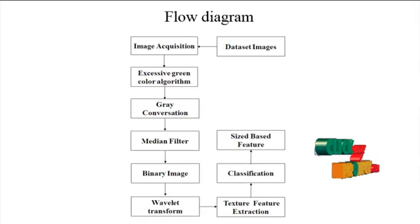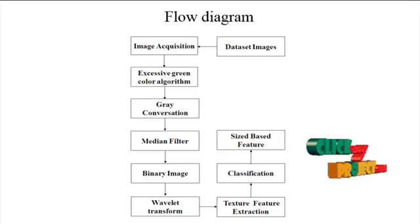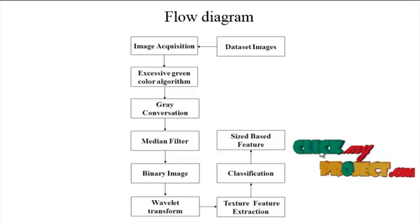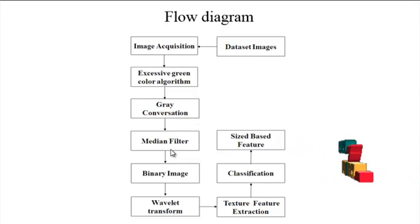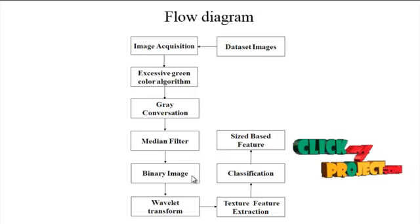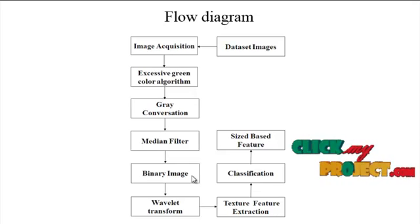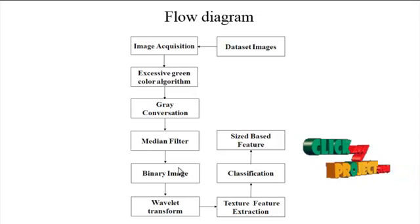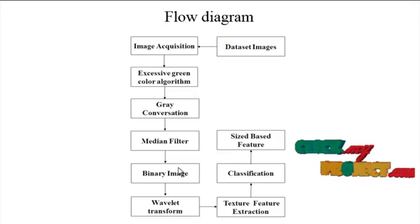In the size-based feature texture classification, it should determine whether a particular region is crop or weed. The area and perimeter are important to classify the image. The median filter is used to remove noise in the input image. A binary image is extracted from the wavelet transform. Feature extraction extracts features from the particular image, making it easier to classify.